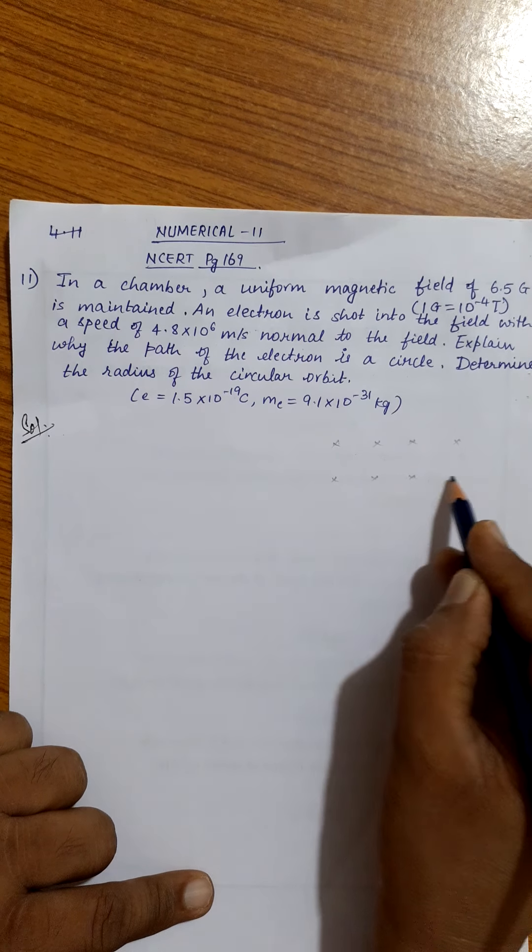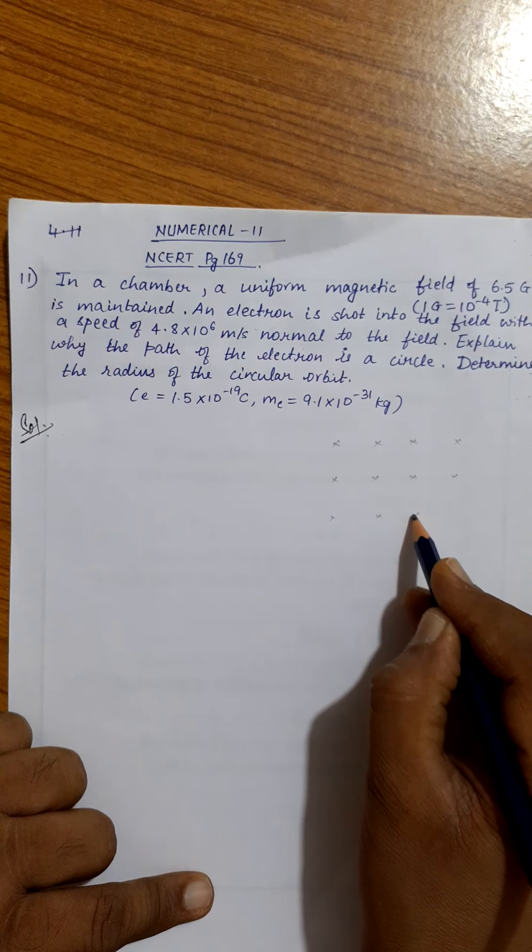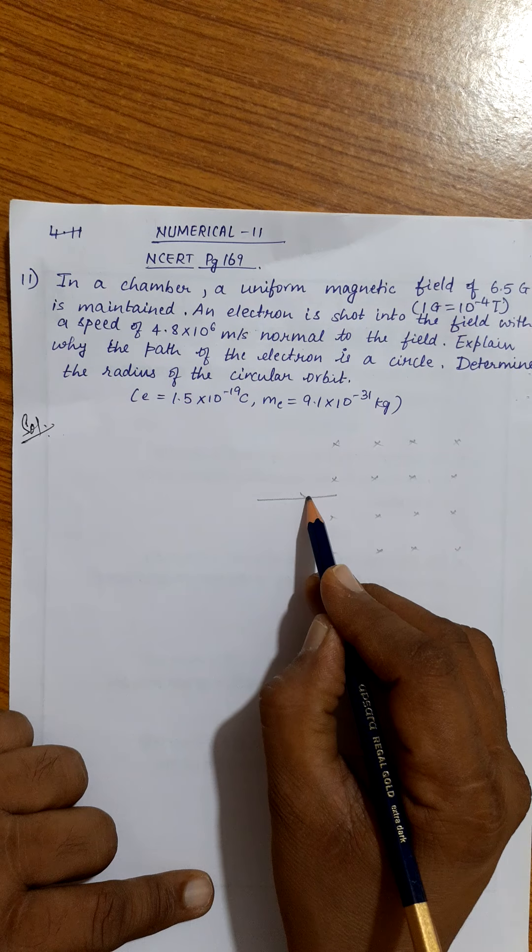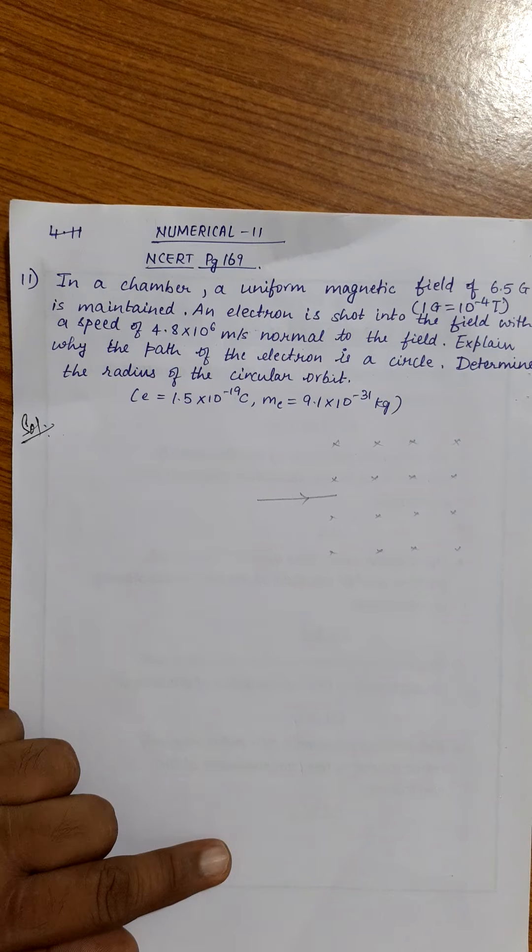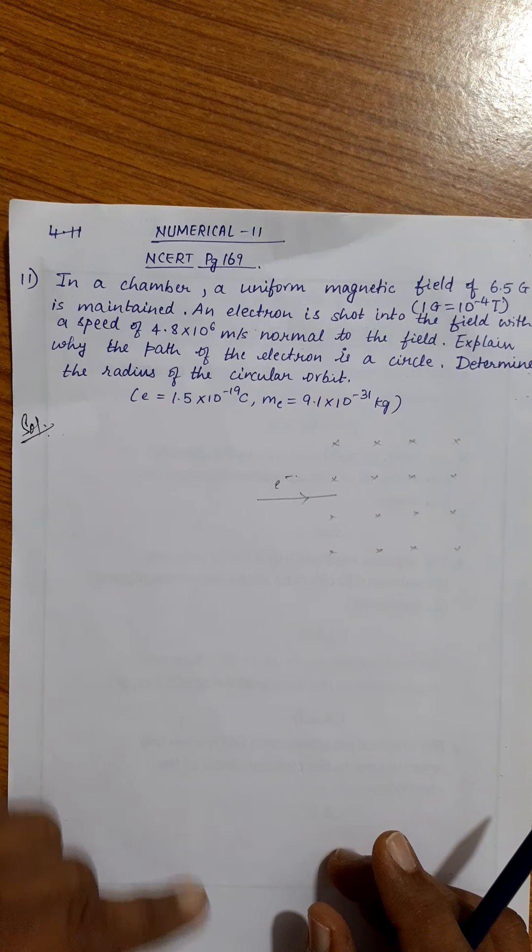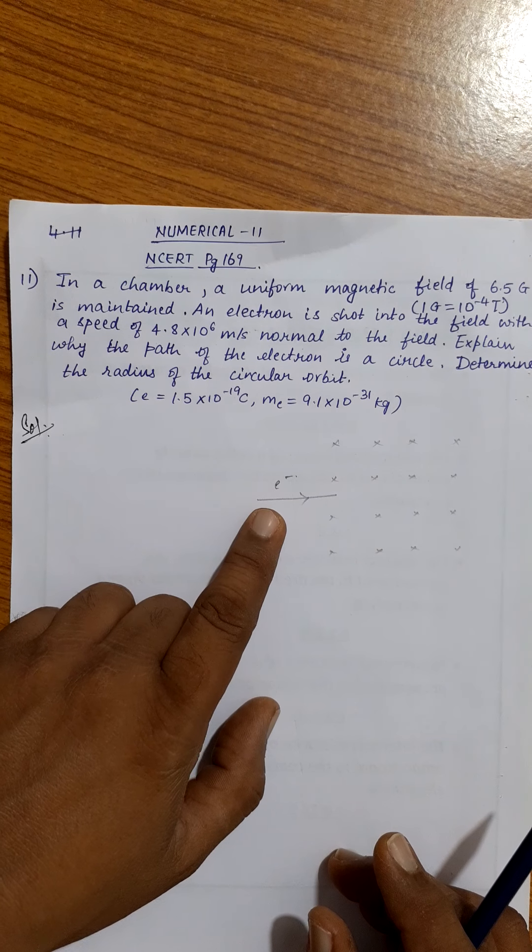A magnetic field like this into the plane of paper, and an electron enters perpendicular to the magnetic field. According to the right hand rule, the charged particle, since it is an electron, a negatively charged particle, will move in a circular path like this.